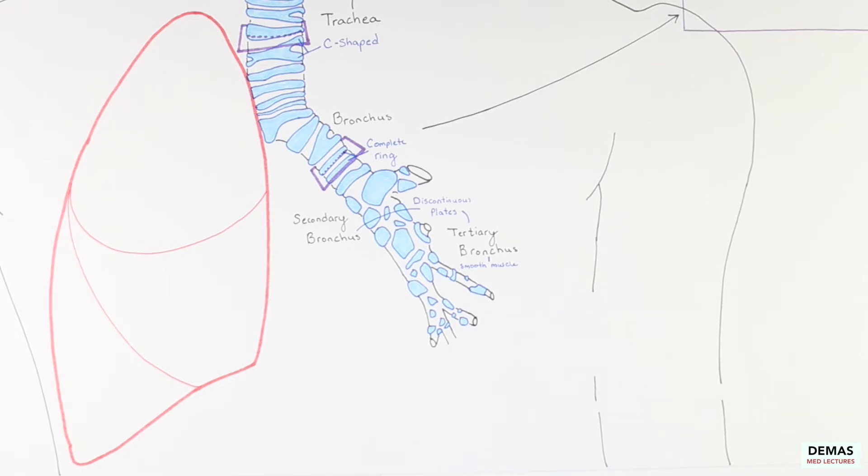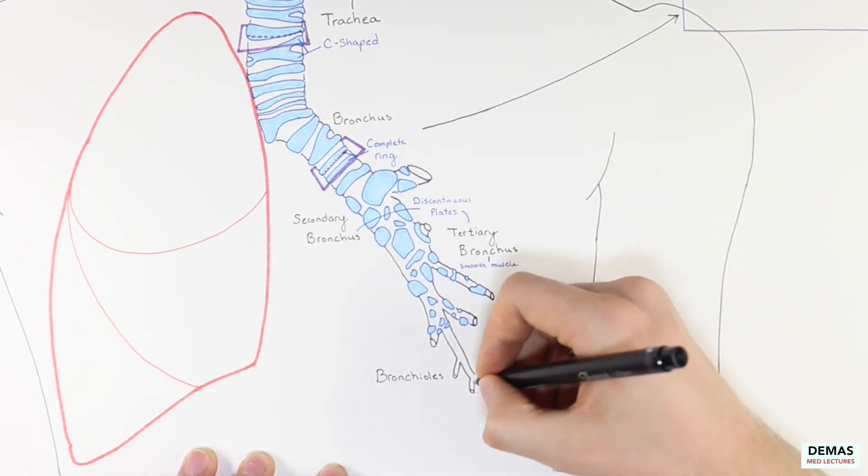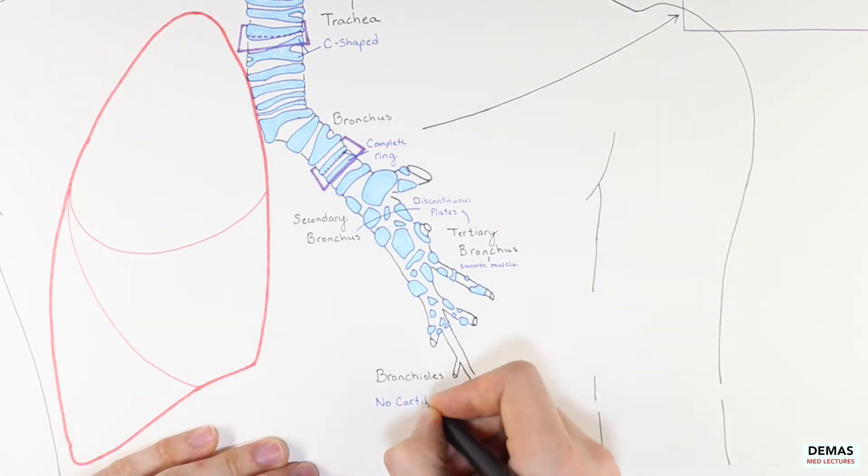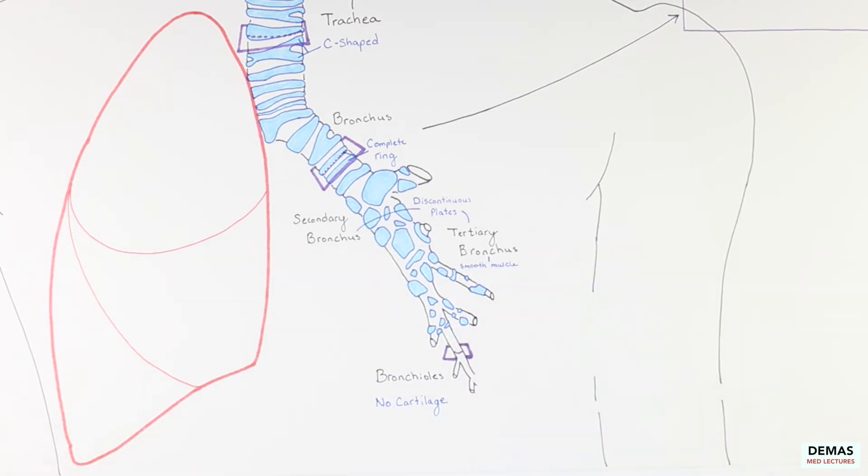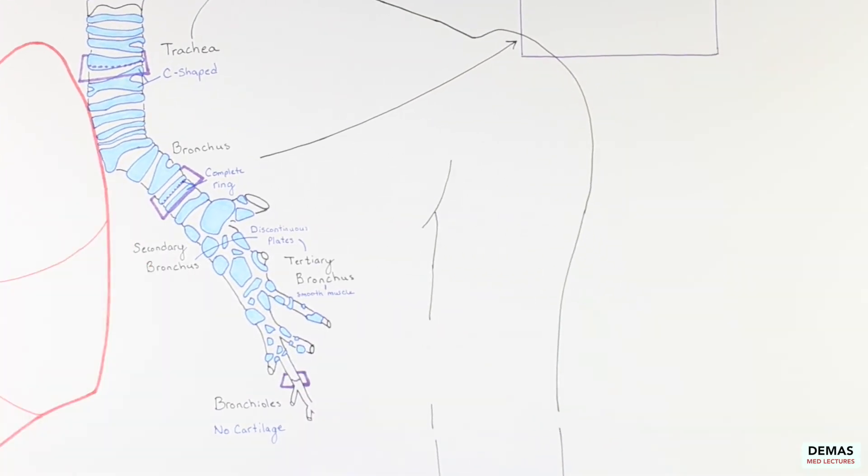The tertiary bronchi then become small airways called bronchioles. The bronchioles do not contain any cartilage or glands. The larger bronchioles have pseudostratified ciliated epithelium as shown here.